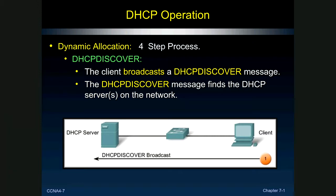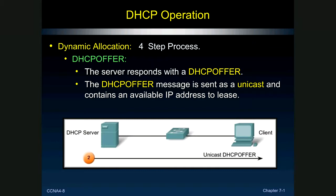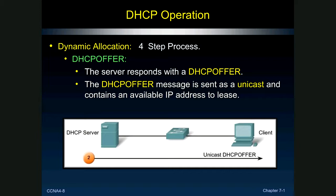All workstations that hear the broadcast are compelled to decode the Ethernet frame and pass the payload up to the operating system. Non-DHCP desktops recognize they are not DHCP servers and stop processing. The DHCP server responds with a unicast Offer back to the client — it's not a broadcast this time because the server now knows the client's MAC address. The client looks over the offer. This step is necessary in case two DHCP servers were present; the client must choose one. This four-step DORA process is similar to TCP's SYN/SYN-ACK/ACK handshake.